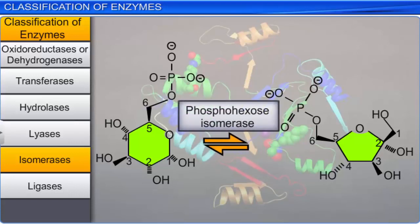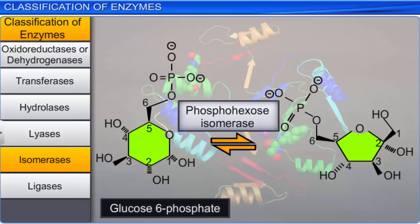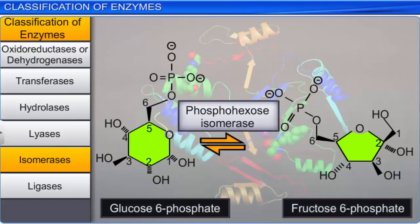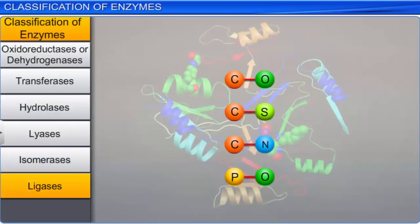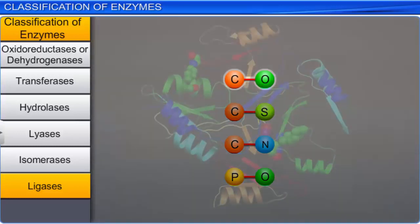Ligases form the sixth class of enzymes. They catalyze the linking together of two compounds. For example, the joining of carbon with oxygen, carbon with sulfur, carbon with nitrogen, and phosphate with oxygen bonds is catalyzed by ligases.